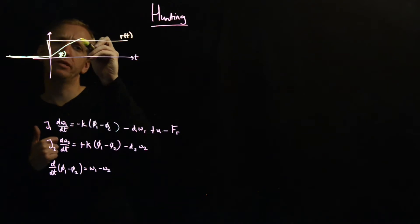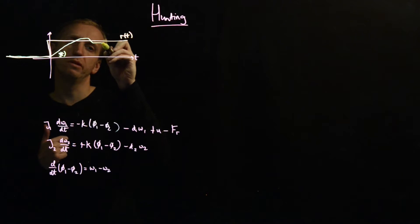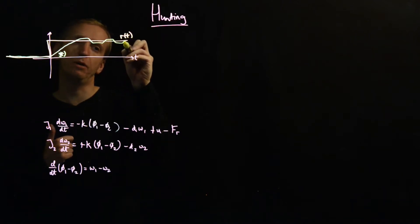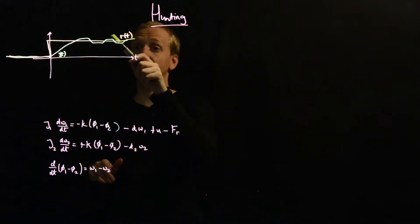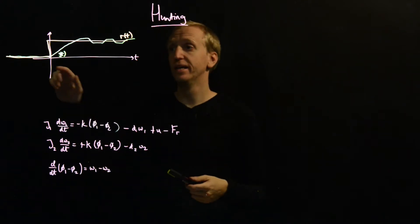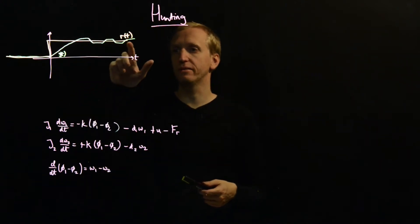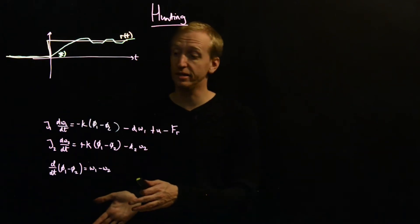We get close but we sort of miss it and then we drop down below and then we sort of keep missing up and down, up and down like this. And it's this phenomena that's called hunting. The output is hunting for the reference signal but it never seems to settle down to the reference signal. Instead it sort of seems to be stuck in this limit cycle around the new operating point.